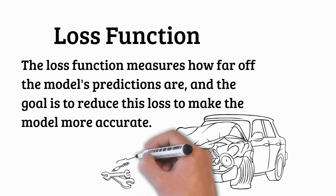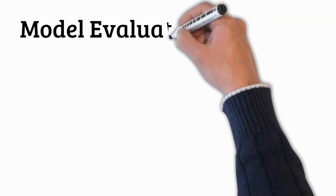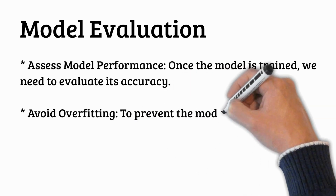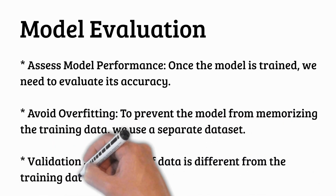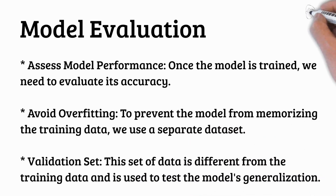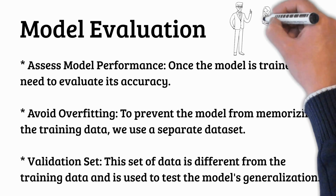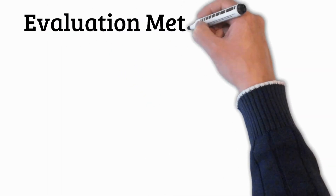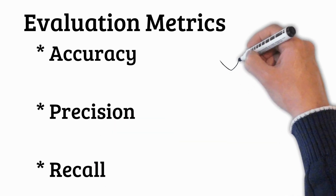Once the model is trained, we need to assess how well it's performing — this is model evaluation. We don't evaluate using the same data it was trained on, because that would be like testing a student on homework they've already seen. So we use a separate dataset called the validation set, which acts like a quiz for the model. We feed this data in, it makes predictions, and we compare those predictions to actual values to calculate accuracy. Evaluation metrics like accuracy, precision, and recall help us assess how well the model is doing.